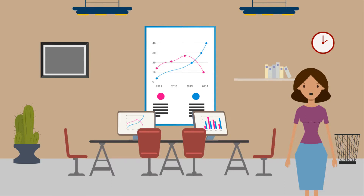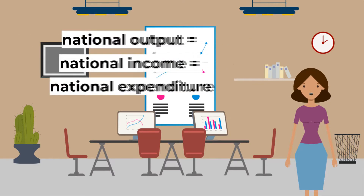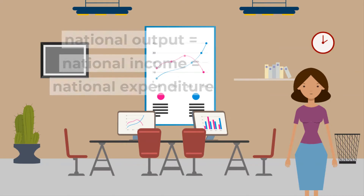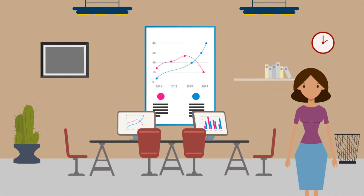Resources are used to produce goods and services, but how can we measure how the total output of goods and services grows or changes over time? National output equals national income, which equals national expenditure. We can therefore measure total output in three ways, because the value of output is also equal to the total amount spent on purchasing it.